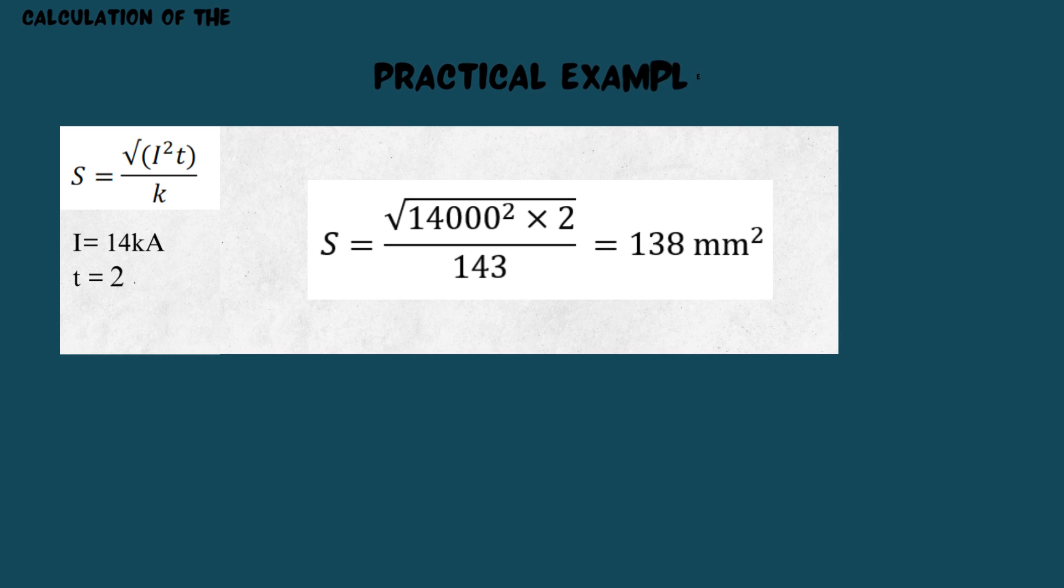After applying the adiabatic equation, we see that the minimum cross-section is 138 square millimeters.